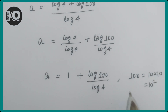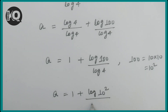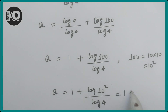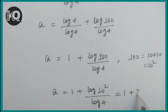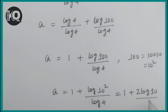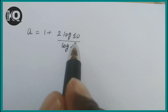We can factorize 100 as 10 times 10, which is 10 squared. So a = 1 + log(10²)/log(4). Applying the power rule, the exponent comes down: a = 1 + 2·log(10) / log(4).